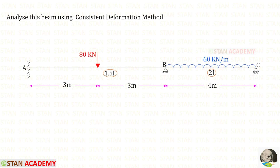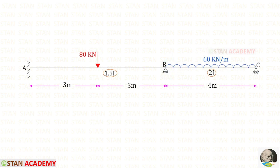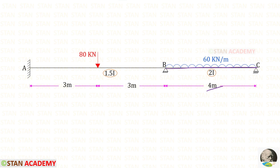Hello everyone, today we are going to analyze this beam using the consistent deformation method. In this beam there are two spans, span AB and span BC. In span AB there is a point load of 80 kilo Newton at the center. In span BC there is a uniformly distributed load of 60 kilo Newton per meter acting for the whole span. Length of span AB is 6 meters with moment of inertia 1.5I, and length of span BC is 4 meters with moment of inertia 2I.